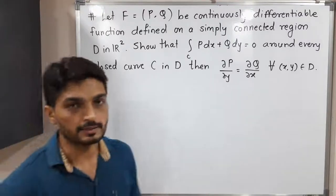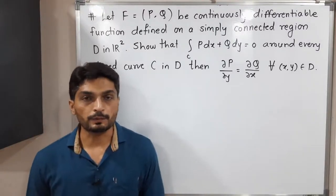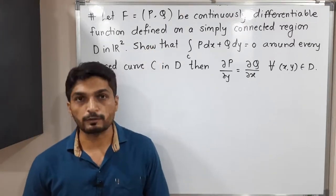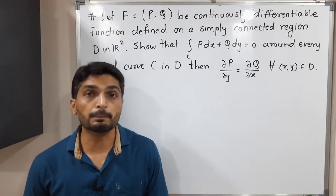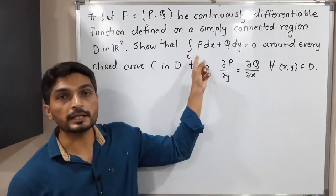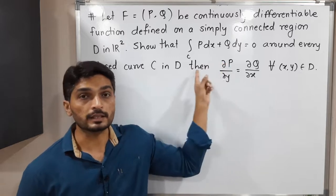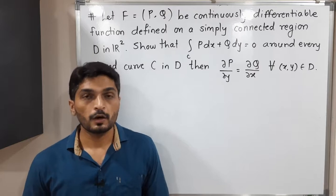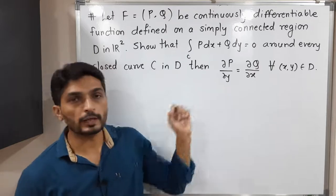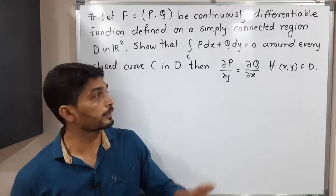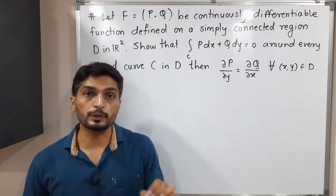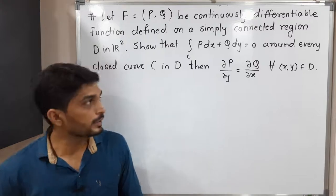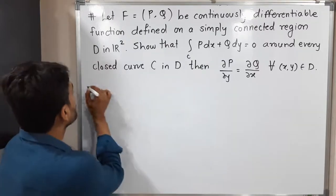Let us discuss this result. We have F equal to (P, Q), which is a continuously differentiable function. The given important information is that the line integral of P dx plus Q dy over C is 0, and this is true for every closed curve C in D. We have to prove that the partial derivative of P with respect to y is equal to the partial derivative of Q with respect to x.